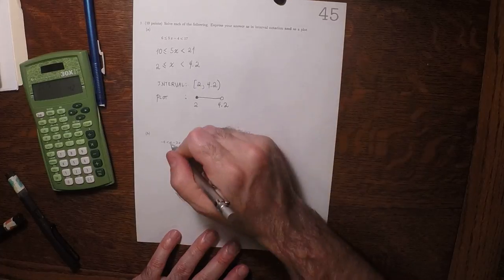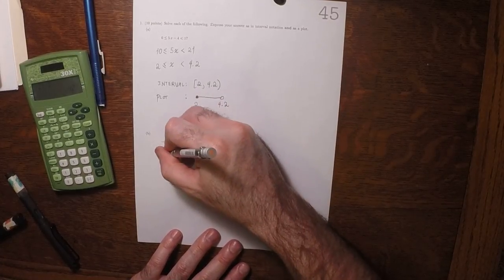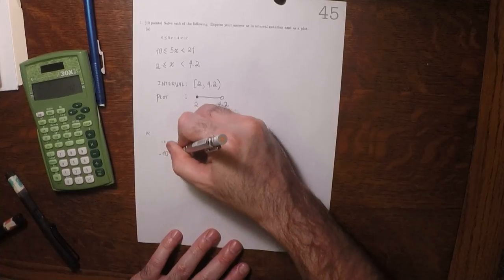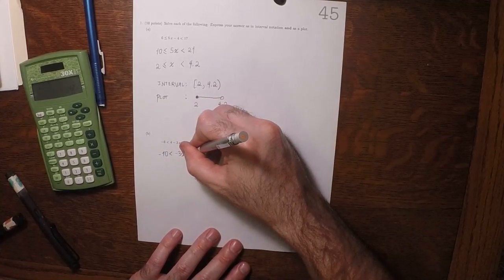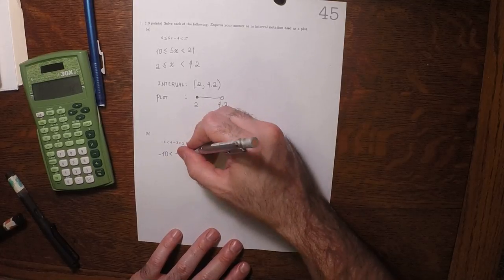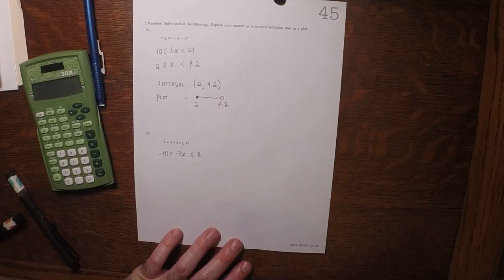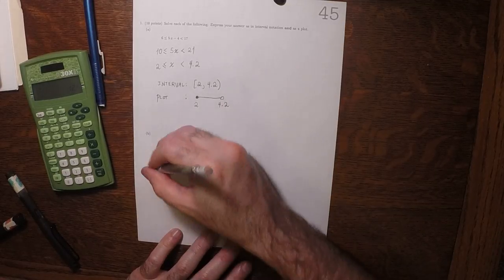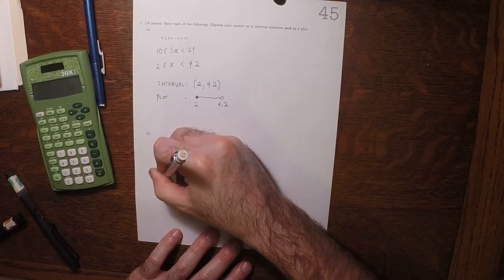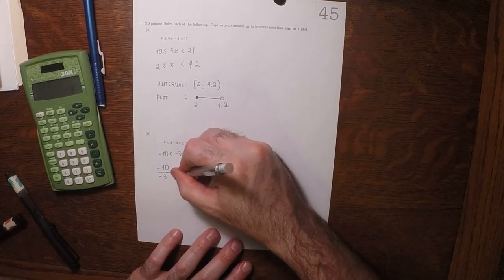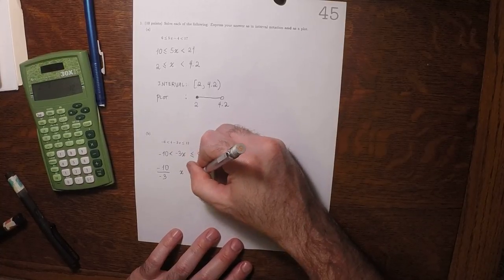Okay, for this one, we'll subtract 4 everywhere. So negative 10 less than negative 3x, subtracting 4 less than or equal to 8. So now we're going to divide by negative 3. So that will be negative 10 divided by negative 3x and 8 over negative 3.